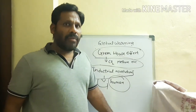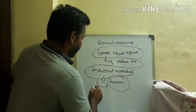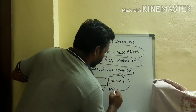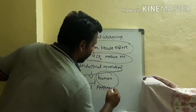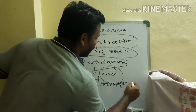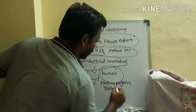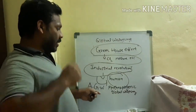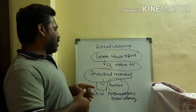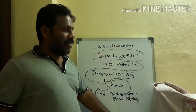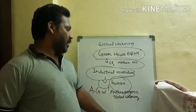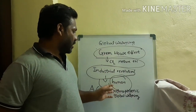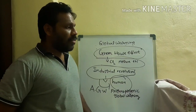Global warming is nothing but AGW — Anthropogenic Global Warming. The current trend of global warming is called anthropogenic global warming. Why? Because as established industries, as well as to meet our daily life needs, so many goods are being produced and services required, industries have created a lot of gas releases. This is called global warming.